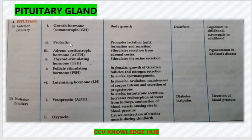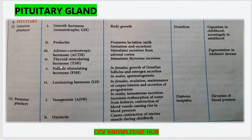The next hormone is Prolactin, which promotes lactation — that is, milk formation and secretion. The next hormone is Adrenocorticotrophic hormone, ACTH, which stimulates secretion from the adrenal cortex. And thyroid stimulating hormone stimulates thyroxine secretion, which is necessary for thyroid gland function.